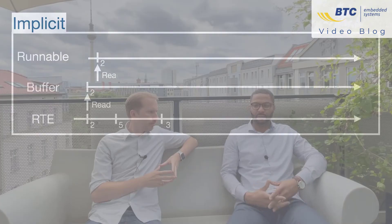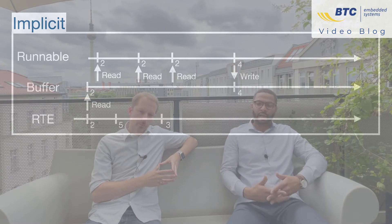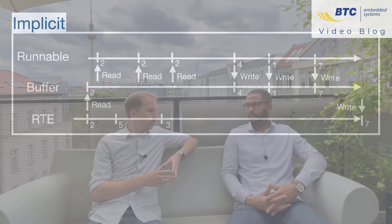So what's the main difference between these two modes? The difference is mainly related to how dynamically a runnable should access the data. With implicit communication, the data is placed in a buffer. For a read operation, the buffer is updated before the runnable starts and will not be modified until the execution terminates. For the write operation, the written data will be updated in the buffer only after the runnable execution.